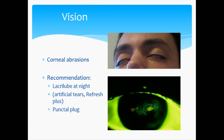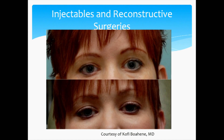Probably more common than retinal abnormalities are corneal abrasions, such as from the inability to fully close one's eyes at night. Lacquer lube at night is very helpful. Artificial tears — Refresh Plus — are sometimes helpful, plus punctal plugs are another option. This individual with FSHD had a lot of difficulty with drying of her eyes at night and watering during the day. She went ahead and had injectables — this can be done with collagen or fat — and implants underneath the eye, which essentially cured her issues.